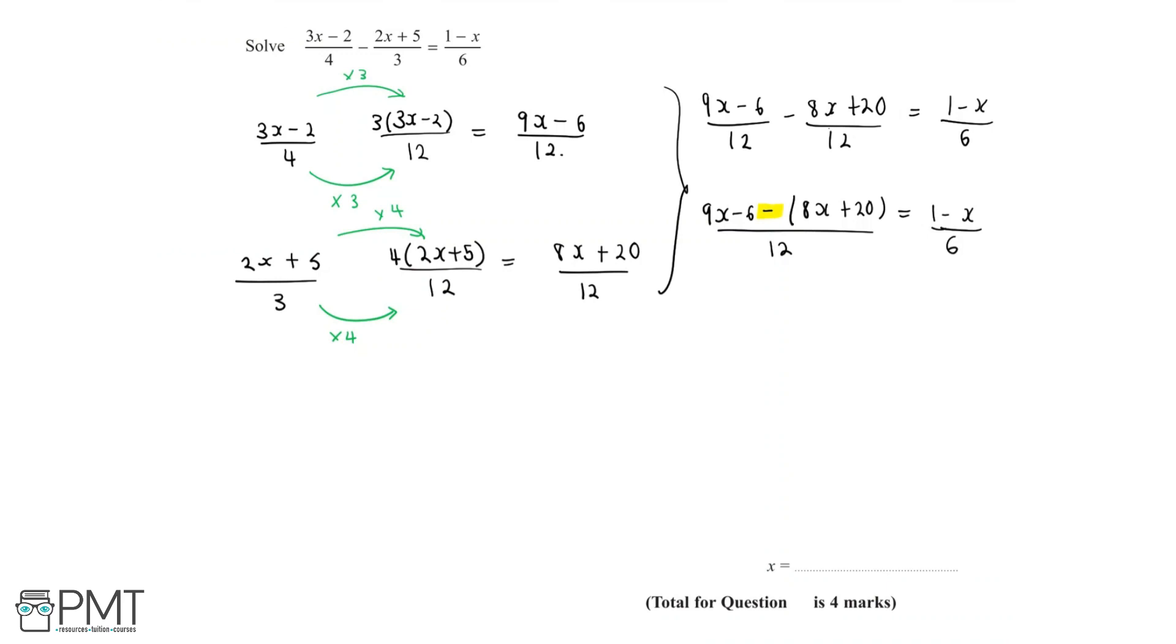So we end up with 9x minus 6 minus 8x minus 20 all over 12 equals 1 minus x over 6. Now we can simplify this further by collecting like terms. Looking at the equation that we have, we can highlight the like terms. We have 9x and minus 8x as our like terms, and then we also have the constants minus 6 and minus 20.